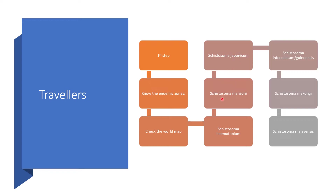When it comes to Schistosoma mansoni, if your journey will take you to Sub-Saharan Africa, South America — particularly Brazil — or South Caribbean islands like Aruba, Barbados, St. Lucia, St. Vincent, Dominica, Bonaire, Curaçao, and Martinique, you can come across Schistosoma mansoni. This may not be the end of the list, but I want to guide you as much as I can.